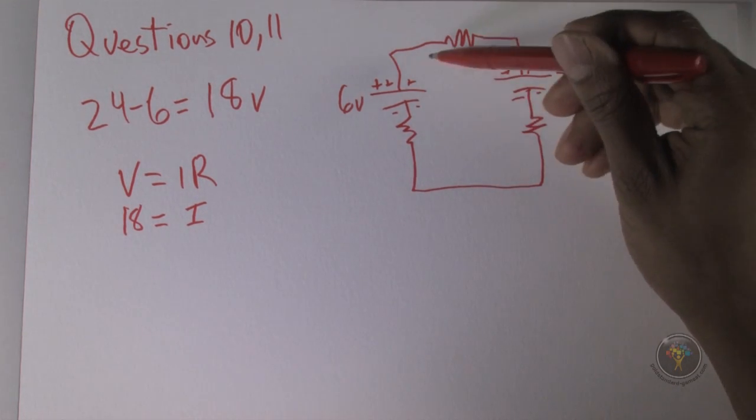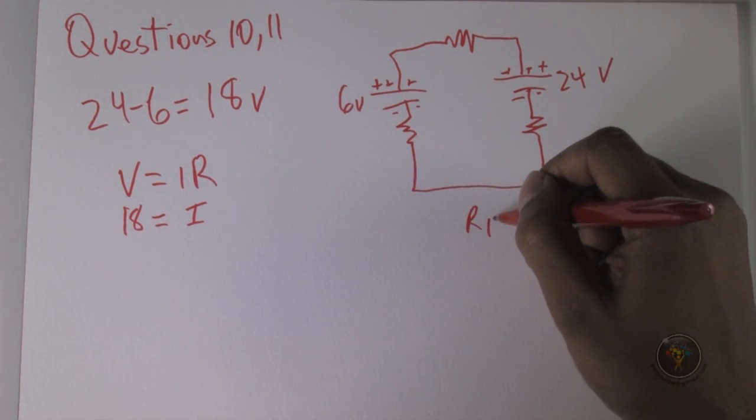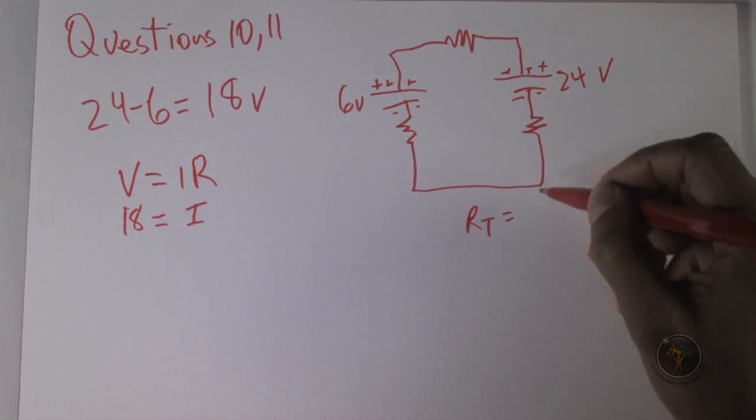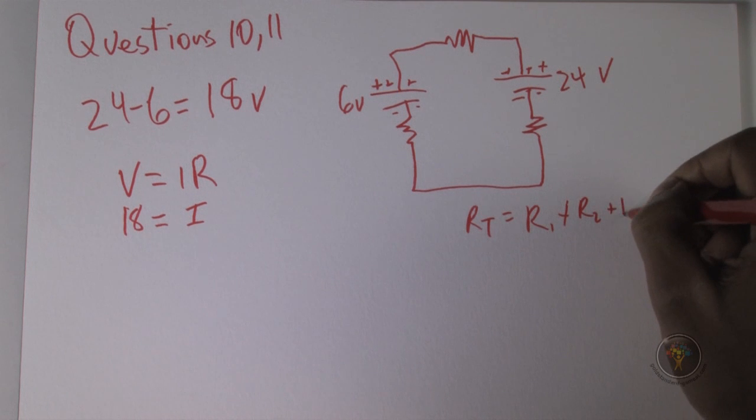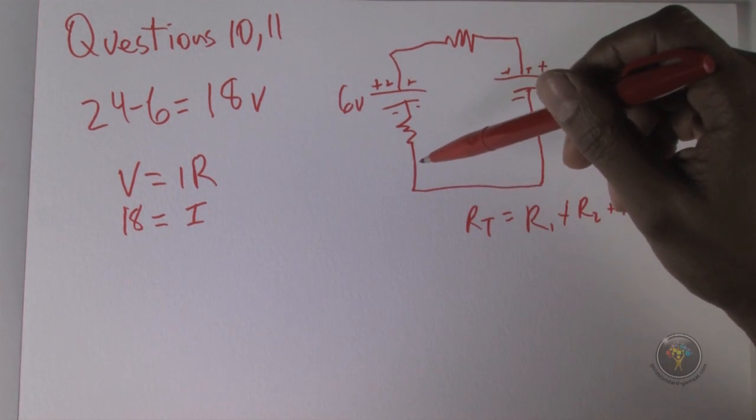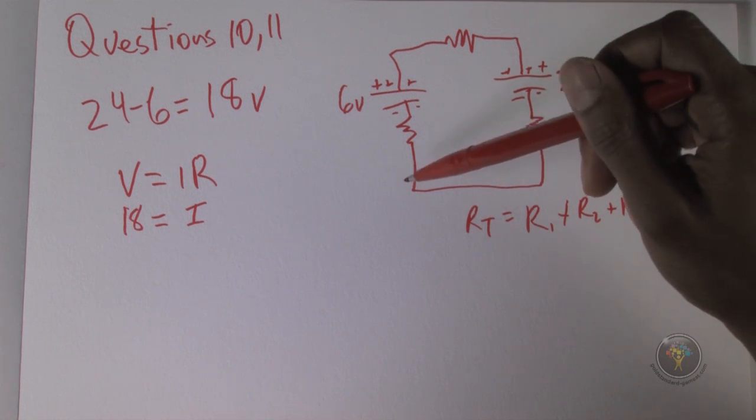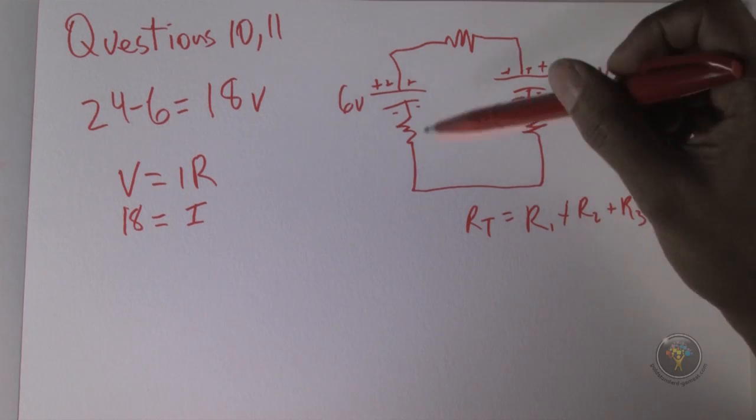Because it's all in a row, we just use the formula for total resistance for resistors in series, which is just R1 plus R2 plus R3, etc. So we just have to add the resistances. We have one resistor at 1 ohm, the other one 4.5, and the other one at 0.5, so that's 6 ohms.